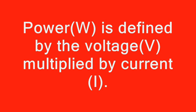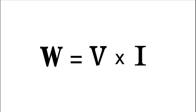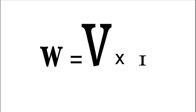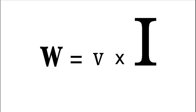Power is defined by the voltage multiplied by current. This equation indicates that the higher the voltage, the lower the current, and that the lower the voltage, the greater the current, for the same power.